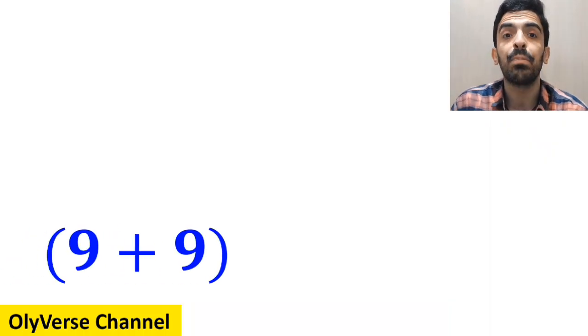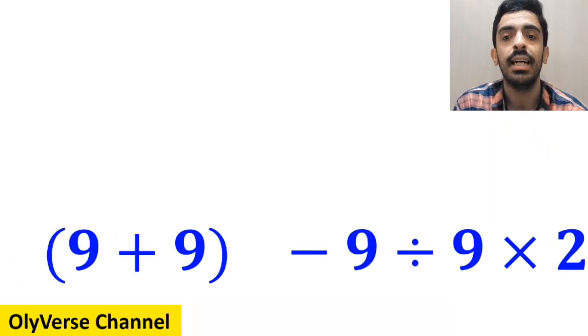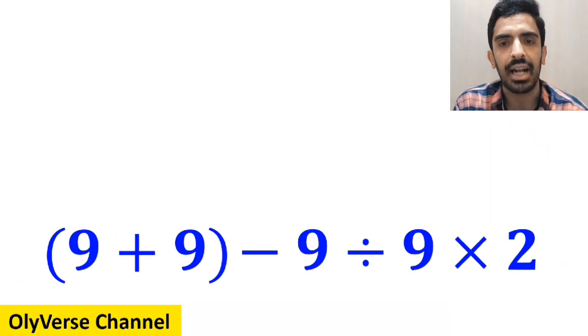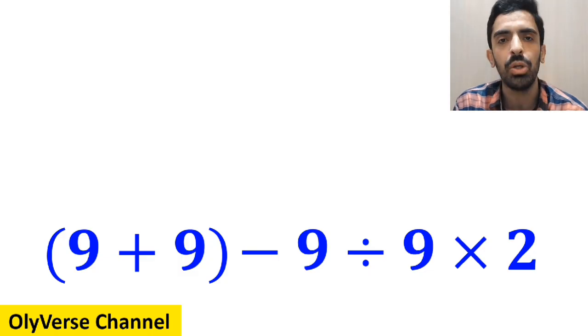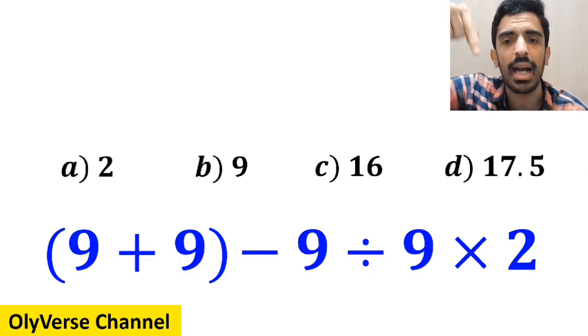What is the value of the expression 9 plus 9 inside the parenthesis, then minus 9, divided by 9, multiplied by 2? Which option do you think is the correct answer to this question?